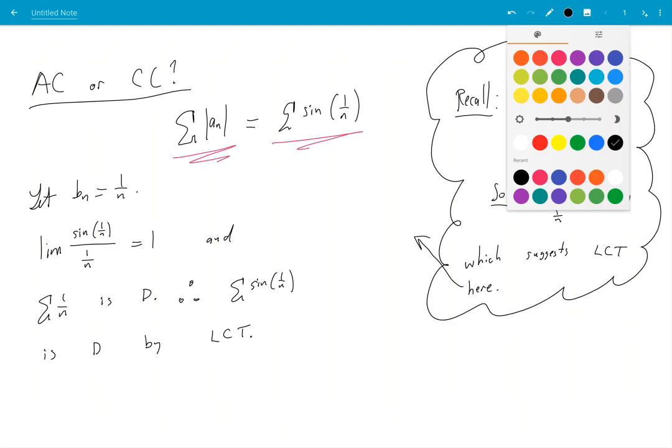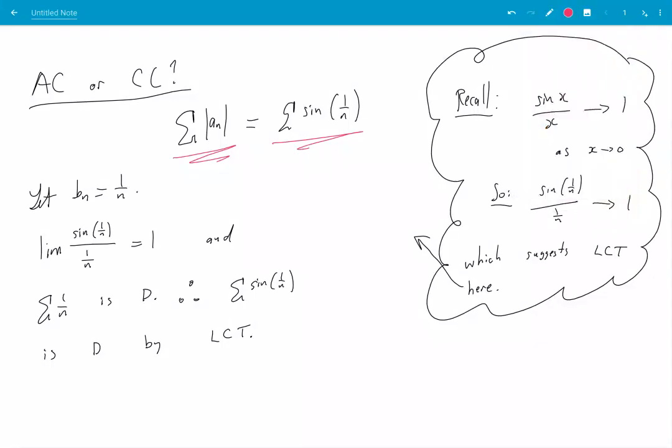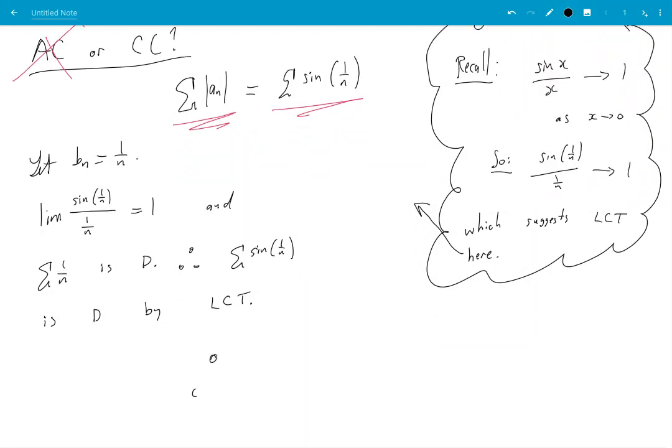So that means that my original series is not absolutely convergent. That was my original series, (-1)^n sin(1/n), is conditionally convergent.